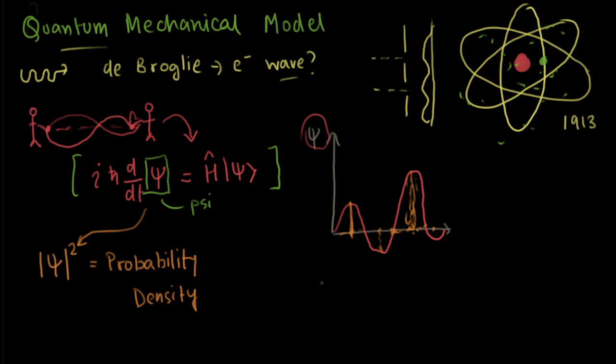And this shows that the electrons are in shells, sub shells, and orbitals. And I'll make a video regarding that sometime later.